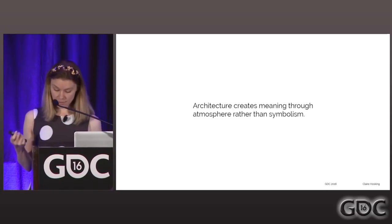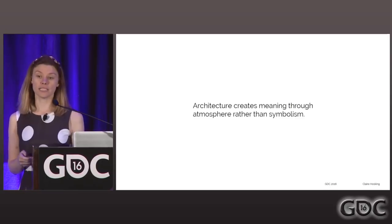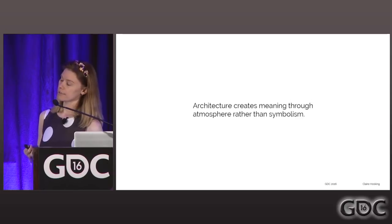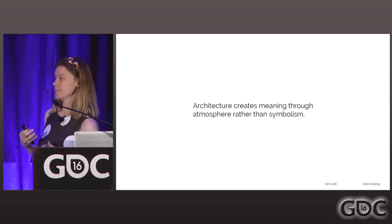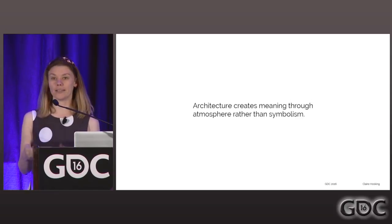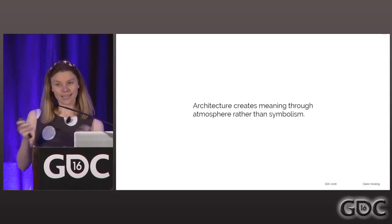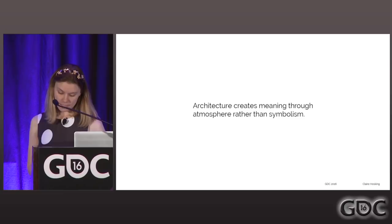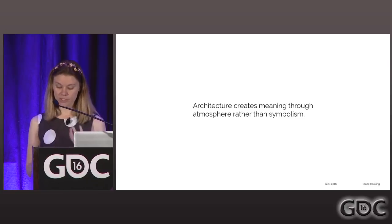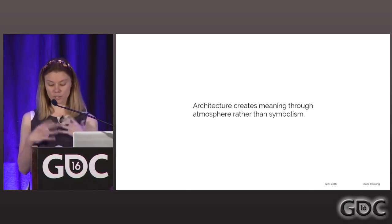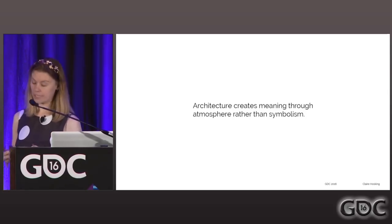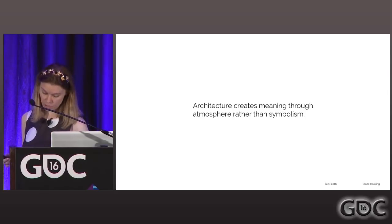Parti helps you consider if you want the qualities of space to be boxy, amalgamations, iconic, woven, folded, or piled up, and the way that affects how the player interacts with the world. Architecture creates meaning through atmosphere rather than symbolism. It's not so much about gabled roofs — it's more about the geometry, material, and texture creating a domestic space that sets a necessary tone for the audience.